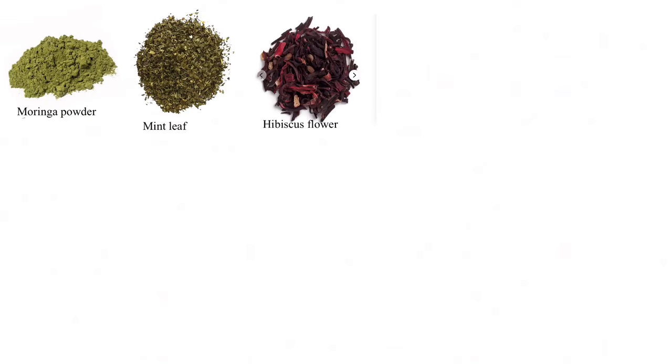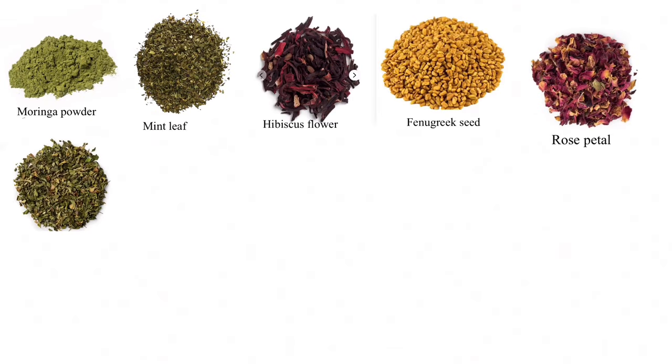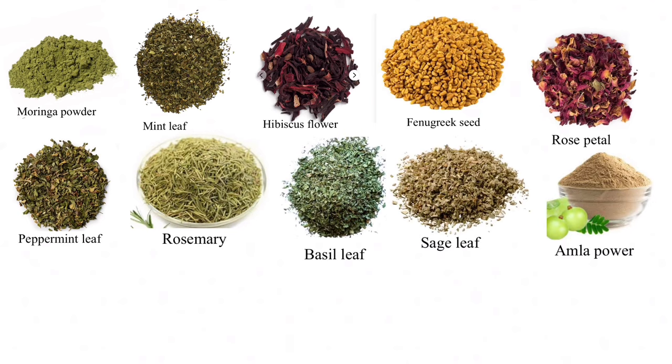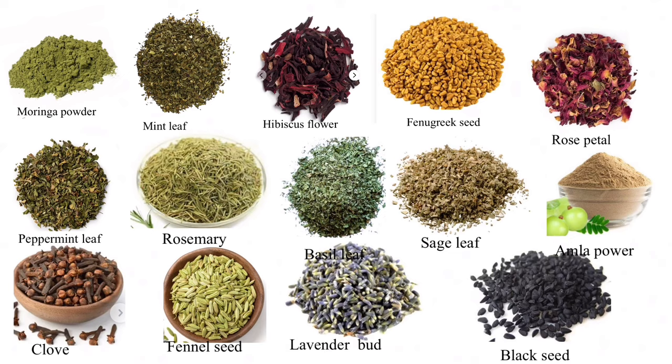Hair growth oils can be applied directly to your scalp, your hair strands, or even added to other hair products you use. Now let me share some of my favorite top ingredients that I use for my hair growth oil and other products: moringa powder, mint leaf, hibiscus flower, fenugreek, rose petals, peppermint leaf, rosemary, basil leaf, sage leaf, amla powder, clove, fennel seed, lavender bud, and black seed.